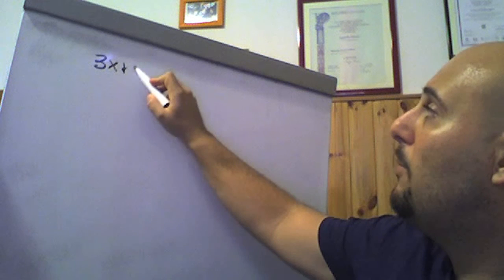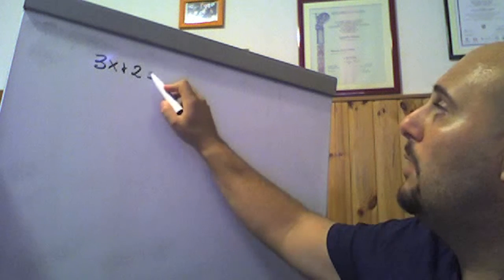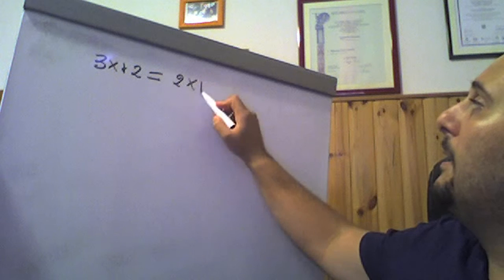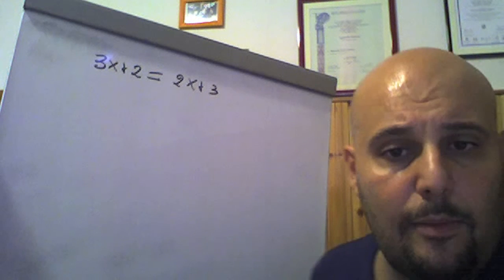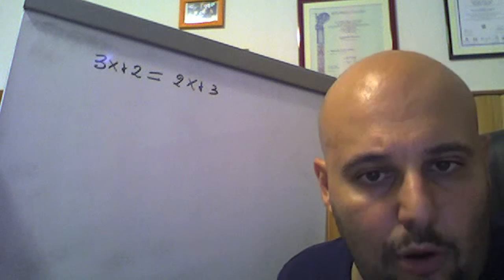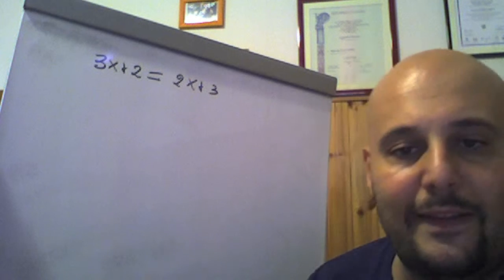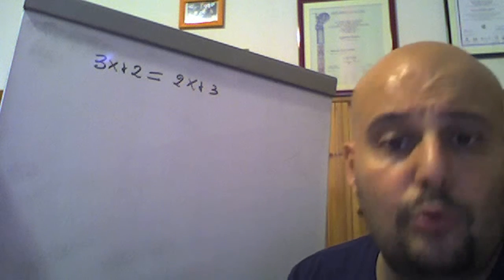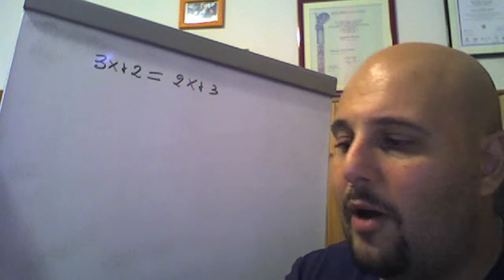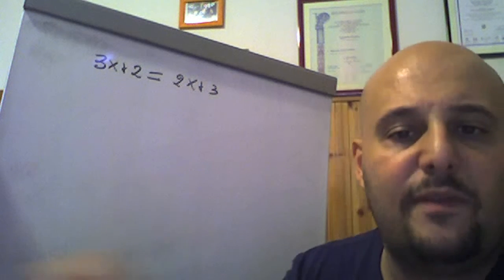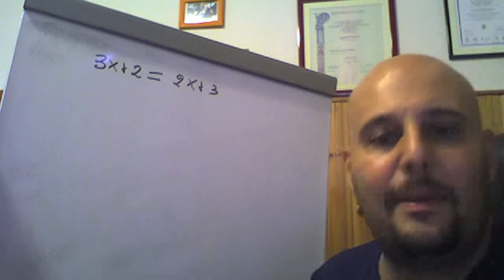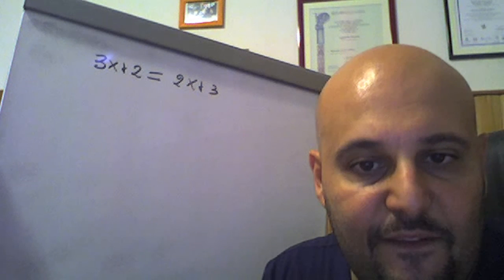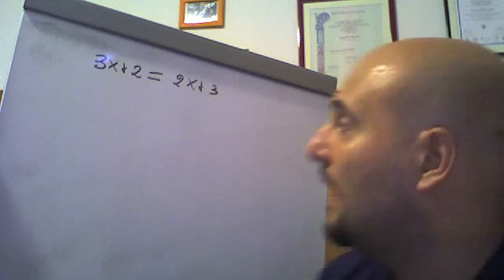We begin with some very simple exercises. For example: 3x/2 = 2x/3. Initially we will also carry out the verification, i.e., once the unknown is determined — once we find our solution — we will calculate and perform the proof, to verify that in correspondence with that value of x the equation is indeed satisfied.